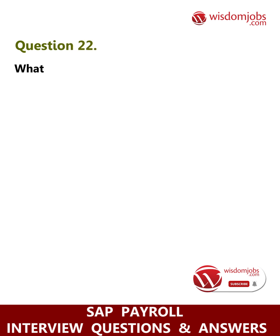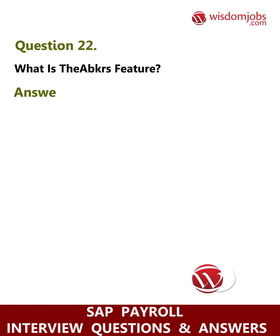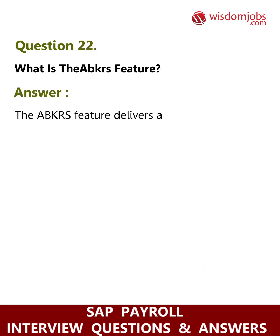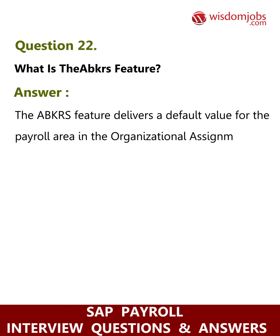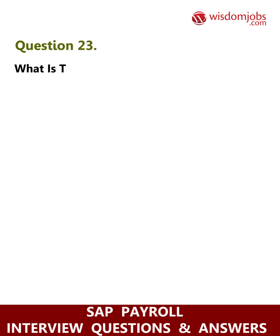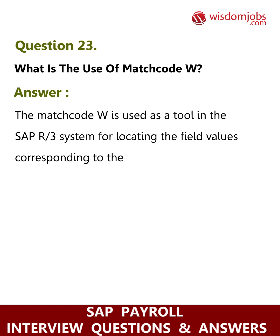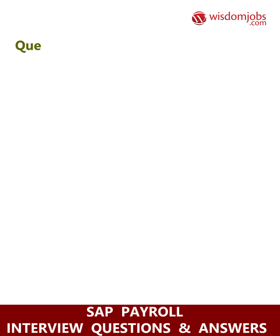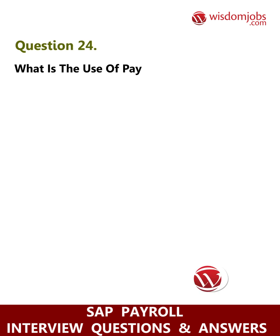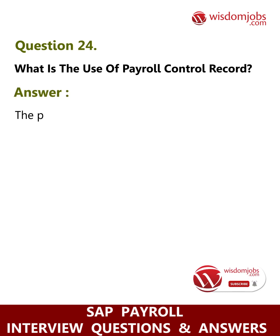Question 22: What is the ABKRS feature? Answer: The ABKRS feature delivers a default value for the payroll area in the organizational assignment info type 8001. Question 23: What is the use of match code W? Answer: Match code W is used as a tool in the SAP R/3 system for locating the field values corresponding to the selected items.